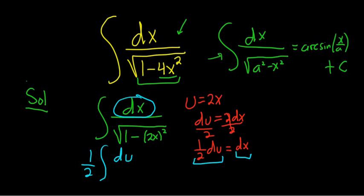So all we've replaced so far is what's being circled here. dx is 1 half du. Then on the bottom, we still have the square root. I'm going to write the 1 as 1 squared, so it matches the formula. So you see that a is equal to 1. Minus, and then 2x is u, so u squared. So now what we have matches the formula.